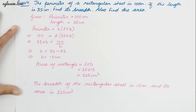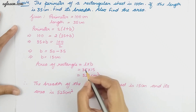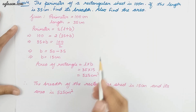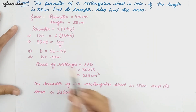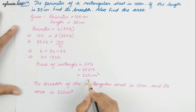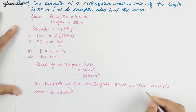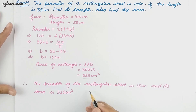To find the area of the rectangle, we use length into breadth. Length is 35 centimeter and breadth, which we found, is 15 centimeter. The area is 525 centimeter square. Therefore, the breadth of the rectangular sheet is 15 centimeter and its area is 525 centimeter square.